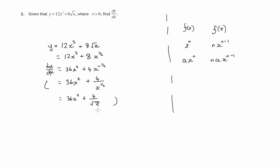So there is our answer: 36x² + 4x^(-1/2).